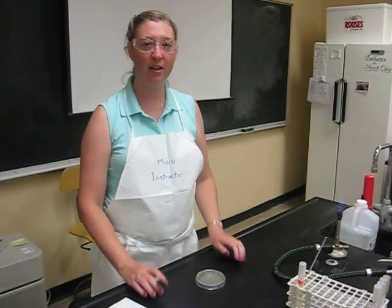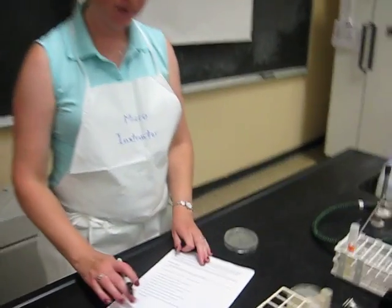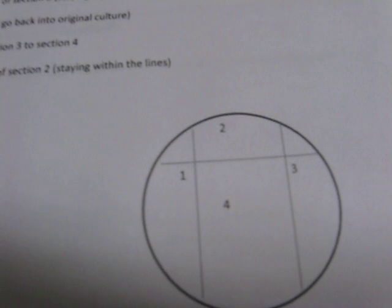So this is streak plate method using the quadrant pattern. I'm going to draw this pattern on my plate to create four sections or quadrants.